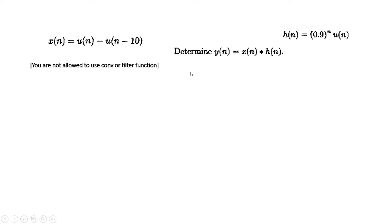While solving this particular question, three things you need to know: number one, how to write MATLAB code for calculating convolution without using any built-in function like conv or filter — that is, using the matrix method. Number two, how you can generate the sequence u(n) or u(n-10), and generally how to generate complex sequences in MATLAB. Number three, how you can generate an exponential-type signal like 0.9^n * u(n).